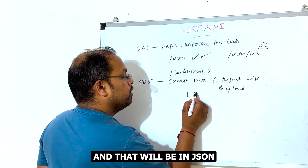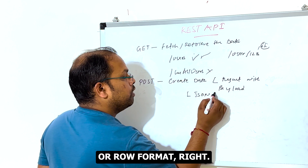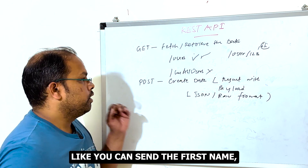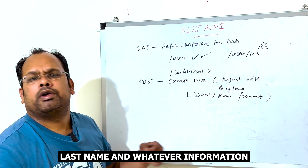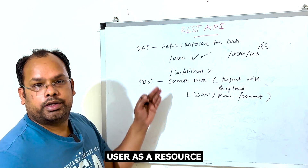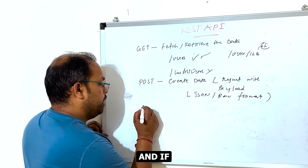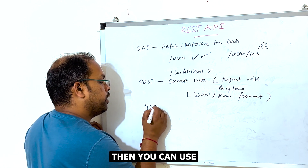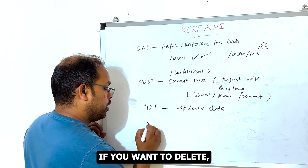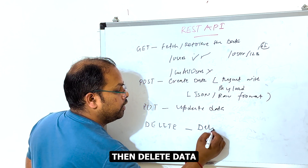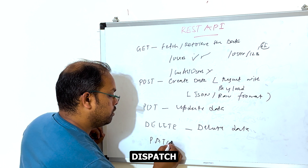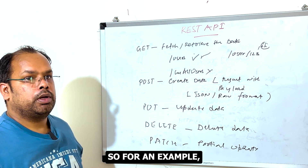POST is basically to create data. You can send a request with a payload in JSON or raw format, with information like first name, last name, and whatever you want to store for the user resource. If you want to update, use the PUT method. If you want to delete, use DELETE. And there is also PATCH for a partial update.